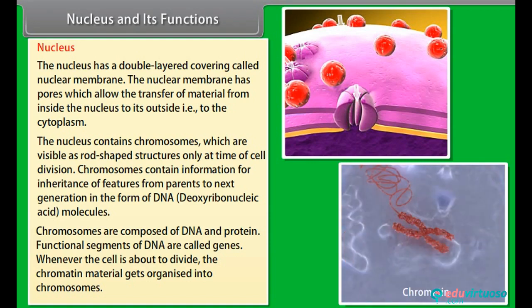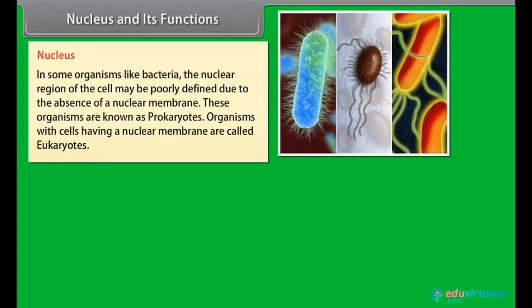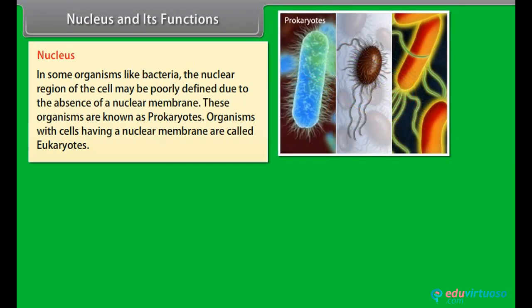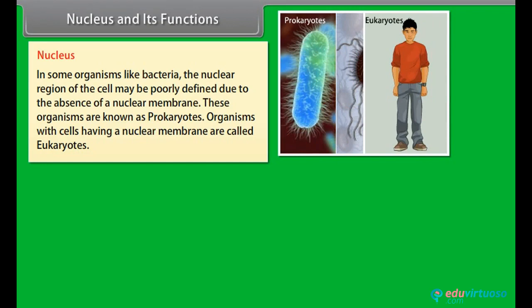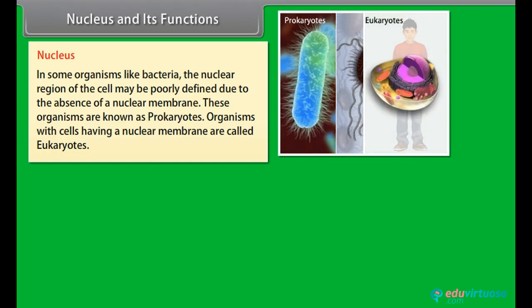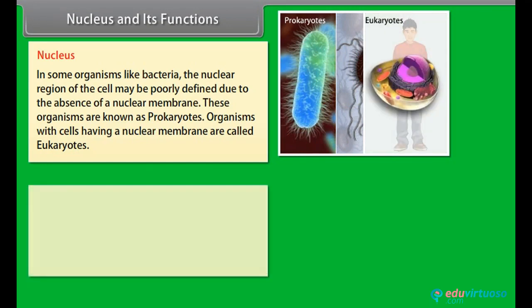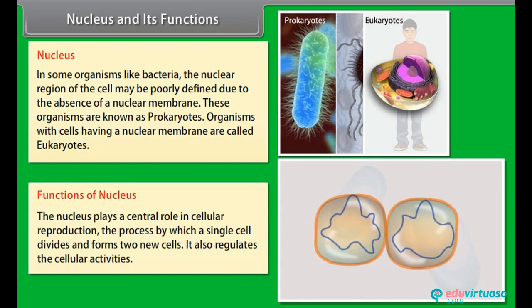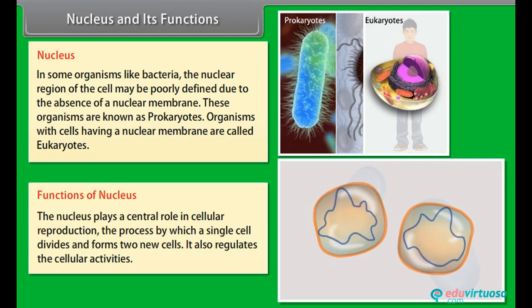Whenever a cell is about to divide, the chromatin material gets organized into chromosomes. In some organisms like bacteria, the nuclear region of the cell may be poorly defined due to the absence of a nuclear membrane; these organisms are known as prokaryotes. Organisms with cells having a nuclear membrane are called eukaryotes. The nucleus plays a central role in cellular reproduction — the process by which a single cell divides and forms two new cells — and also regulates cellular activities.